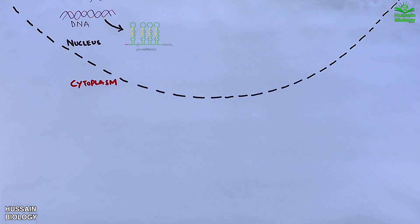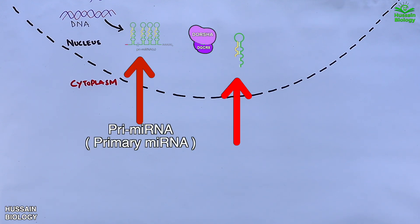Now this primary miRNA is taken up by the Drosha and DGCR8 complex, and cleaves the primary miRNA into pre-miRNA, the precursor miRNA.